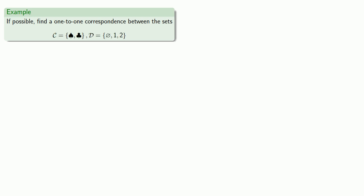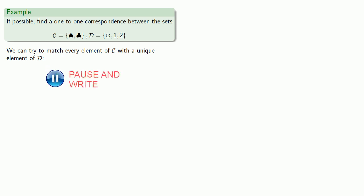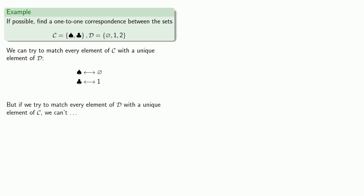How about these sets? We can try to match every element of C with a unique element of D. Let's list our elements of C and match — how about spade to empty set and club to one. But if we try to match every element of D with a unique element of C, we can't, because two doesn't have anything it can match to that isn't spade or club.